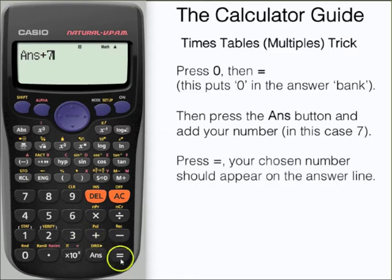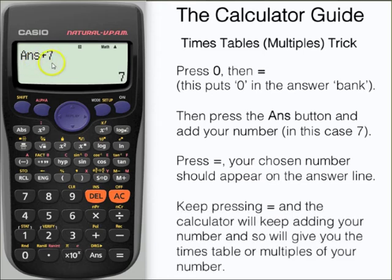If we press equals, that should now put seven into the answer line. If we have a look at the line at the top of the calculator there, its instruction is to add seven to our answer, which is currently seven. That will give us 14 and so on. Therefore, we can produce the seven times table or multiples of seven simply by repeatedly pressing equals.